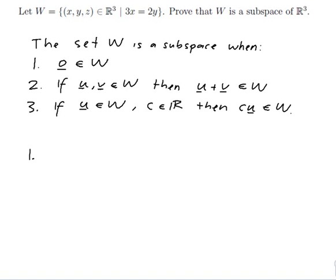1. We want to show the 0 vector in w. How do I tell if a vector is in w? I tell if this equation is satisfied. So the 0 vector x is 0 and y is 0, so we get 3 times 0 equals 2 times 0, so that actually does work. So 3 times 0 equals 2 times 0, so 0, 0, 0 is in w. That was easy.